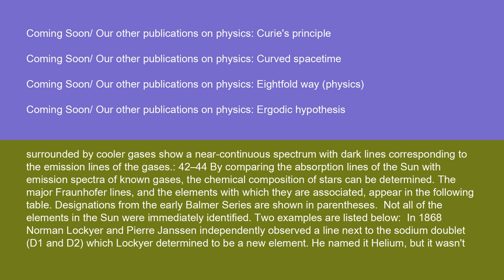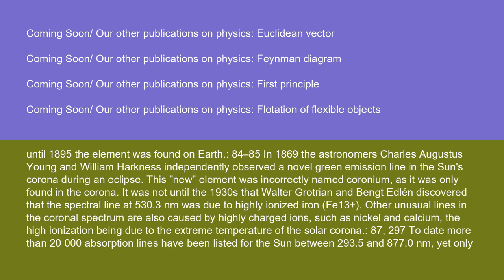Not all of the elements in the Sun were immediately identified. In 1868, Norman Lockyer and Pierre Janssen independently observed a line next to the sodium doublet D1 and D2, which Lockyer determined to be a new element. He named it helium, but it wasn't until 1895 that the element was found on Earth.